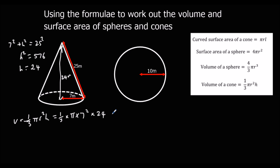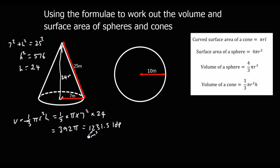The volume is 1 third times pi times 7 squared times 24. Typing that into the calculator gives 392 pi, or as a decimal 1231.5 to 1dp. That is volume, so it's meters cubed.